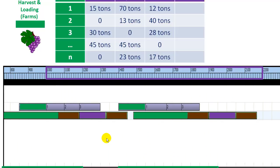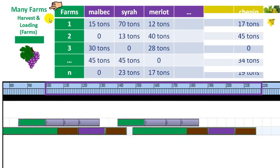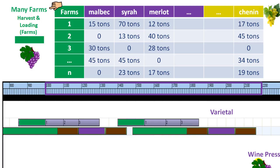Another hypothesis is that the farms have different amounts of grapes according to variety — you have here, say, 15 tons, here none, etc. This is going to constrain the loading activities. You have different varieties like Merlot, Syrah, Malbec, etc.